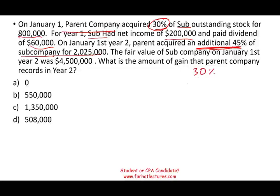Be careful — you are at 30%, then it's an additional 45%, so now you have purchased 75% of this company. We are in control. What happened is we moved from a non-controlling to a controlling interest. The fair value of the sub on January 1st of year two was $4.5 million. The question is: what is the amount of gain that the parent company should record in year two?